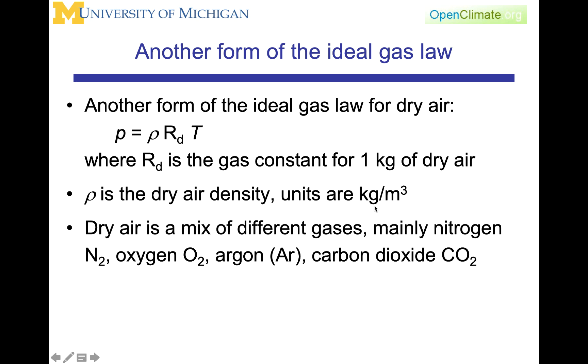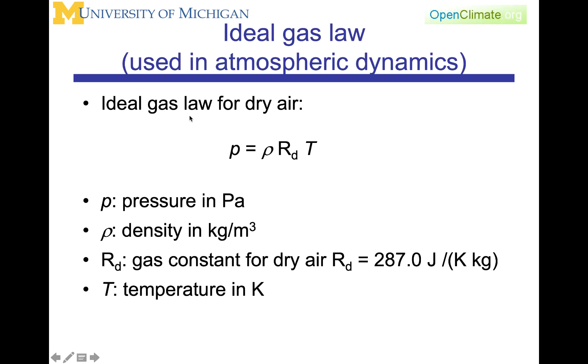We are using kilograms rather than grams as mentioned earlier. This form, P equals rho RD T, is the ideal gas law we'll use most often. P is pressure, rho is density, RD is the gas constant for dry air, and T is temperature in Kelvin. This is important to remember: temperature must be in Kelvin, not Celsius, even though the degree size is the same, or you'll get an incorrect answer.